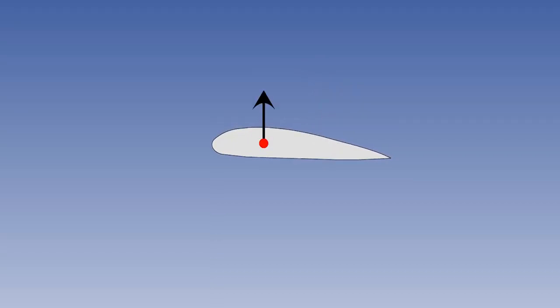The aerodynamic centre, or AC, is a fixed point on the chord line and can be defined as the point where all changes in the magnitude of lift effectively take place and the point about which the pitching moment will remain constant at normal angles of attack. For subsonic air flows of less than Mach 0.4, the AC is located at the 25% chord point, regardless of camber, thickness, or angle of attack.